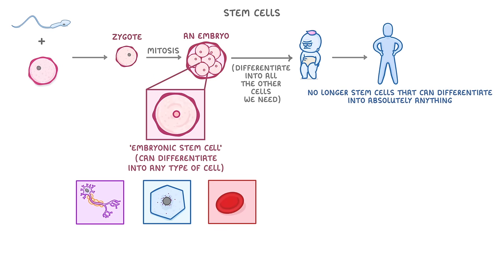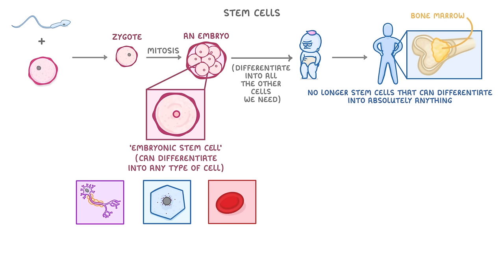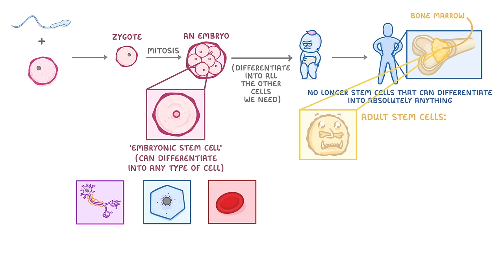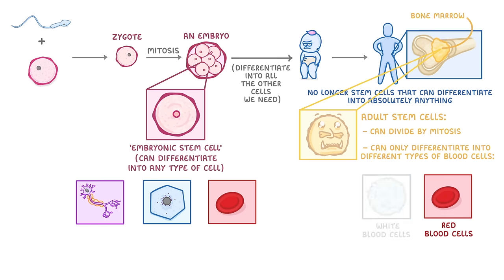In an adult there are no longer stem cells that can differentiate into absolutely anything like the embryonic stem cells can. Instead we have other types of stem cells that have already specialized a bit, meaning they can now only differentiate into a narrow range of cells. For example, in the middle of some large bones there's a jelly-like substance called bone marrow, which contains adult stem cells. These cells can divide by mitosis but can only differentiate into different types of blood cells, like red blood cells, white blood cells, or platelets. The idea is that they can replace damaged cells to keep us alive, but they don't form any new tissues like the embryonic stem cells did.